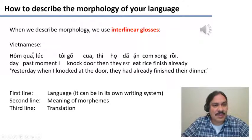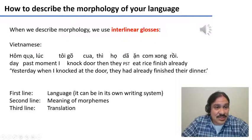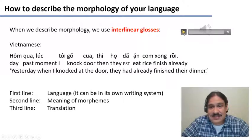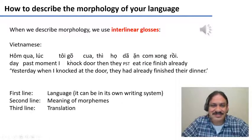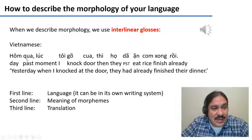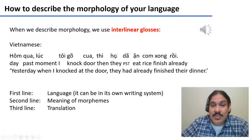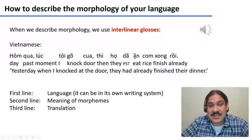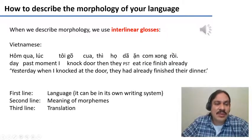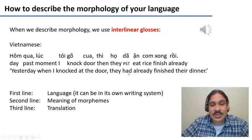Let's look at an example from Vietnamese. First, we have a sentence in Vietnamese — this is just regular Vietnamese writing, and it would sound something like this: 'Hôm qua, lúc tôi gõ cua, thì họ đã ăn cơm xong rồi.' Second, you have the meaning of each morpheme. So, for example, 'họ' means they, 'đã' means past tense, and 'ăn' means eat — and we know this because they are aligned. Third, we have the meaning of the entire sentence: 'Yesterday, when I knocked at the door, they had already finished their dinner.'